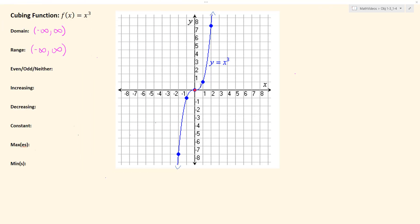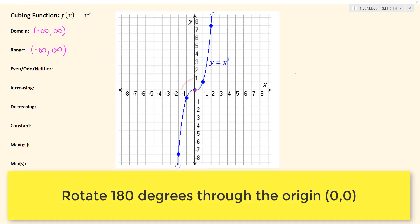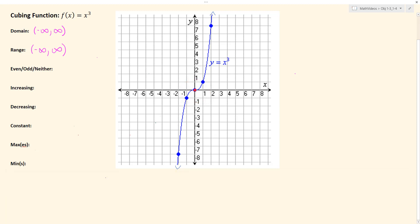Another way to look at an odd function is as a rotation through the origin. The origin is (0,0). And if we were to take our original function and rotate it through the origin 180 degrees, would we end up with our original function?